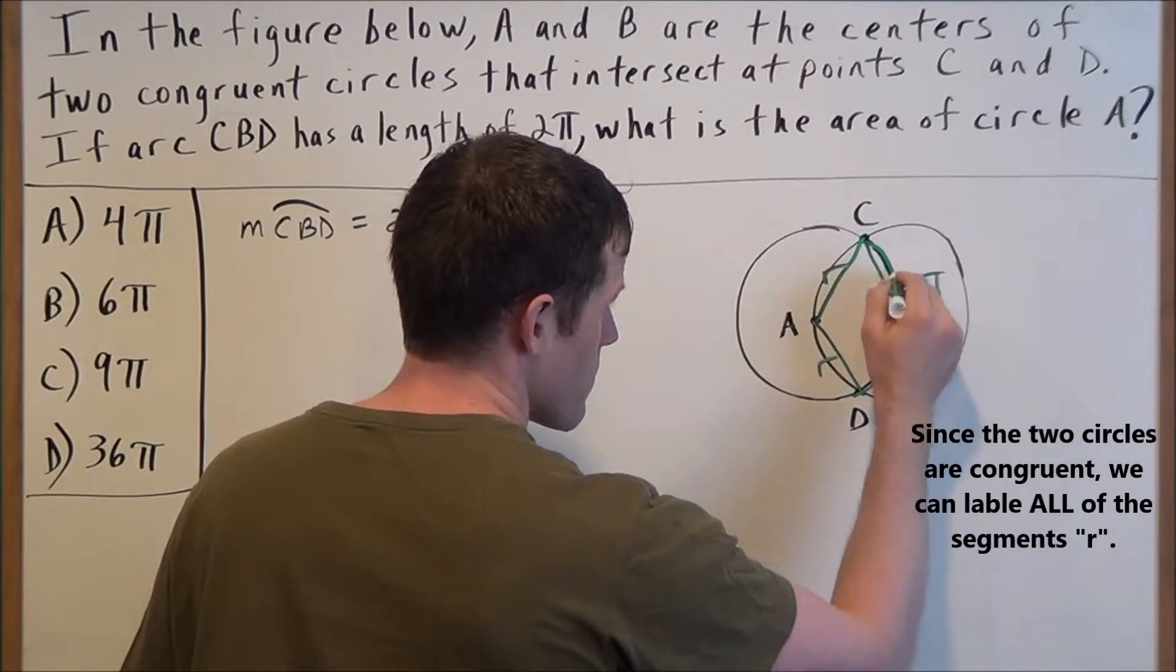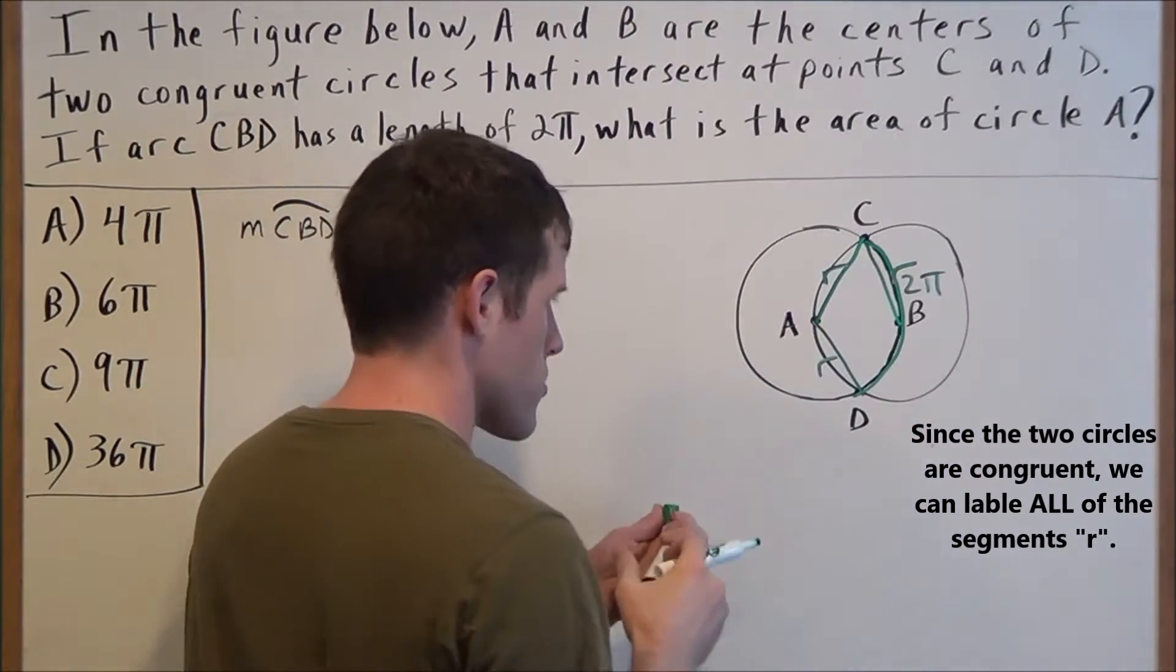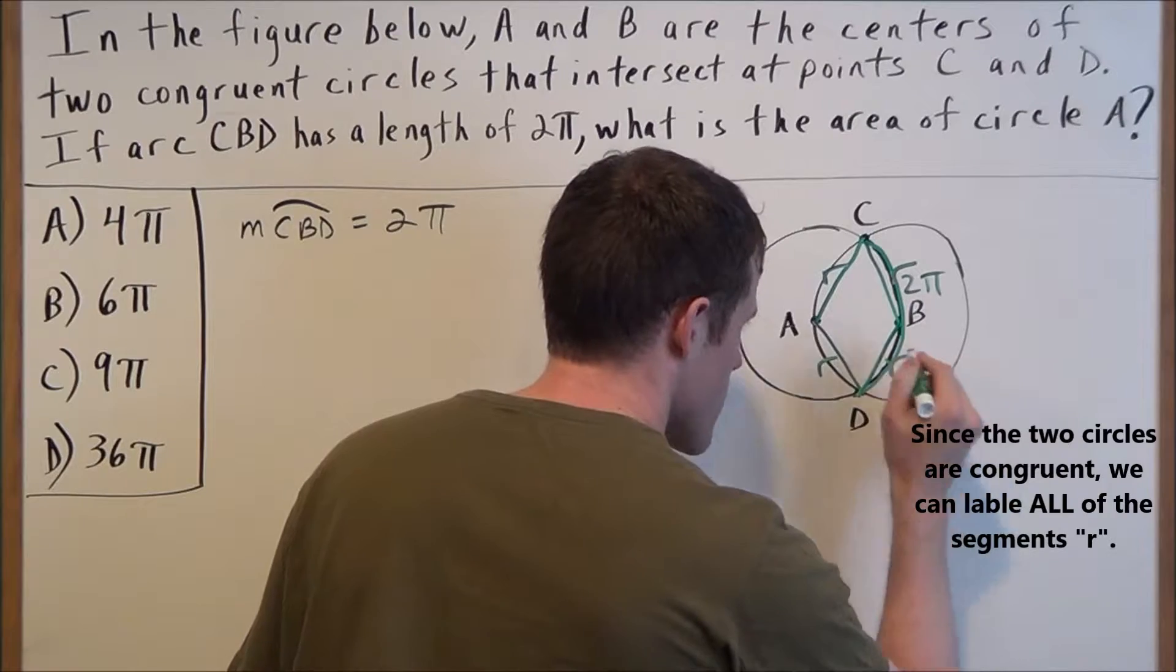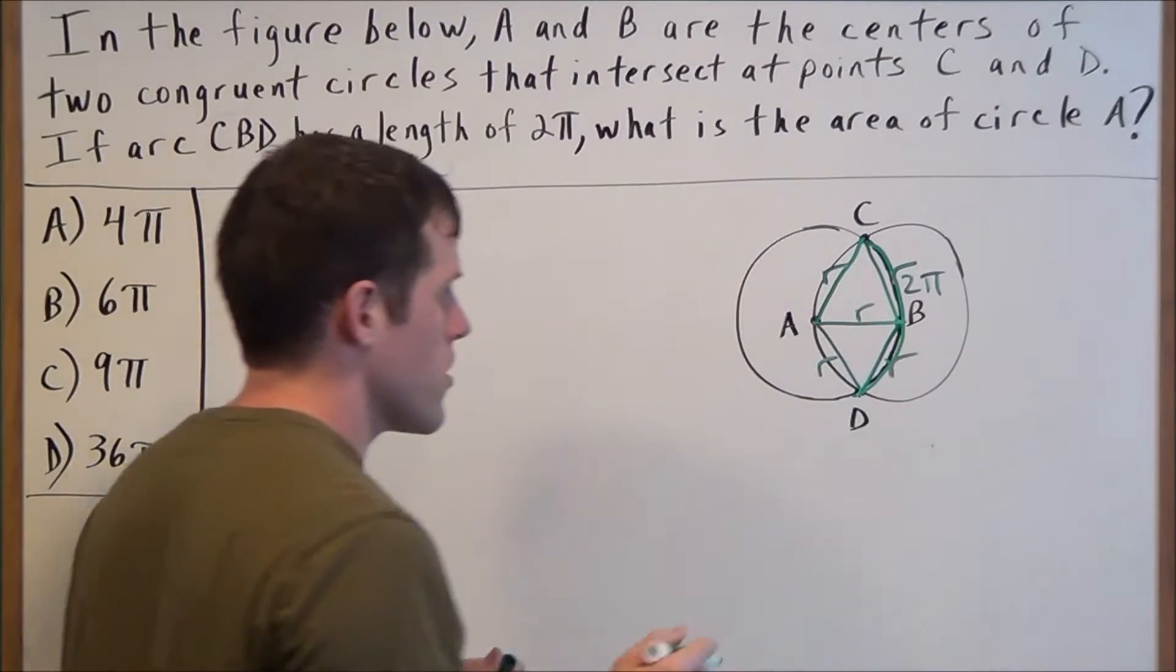So if we draw this in, we could label this with an r as well, and we could label these segments here r. And from A to B also has to be r.